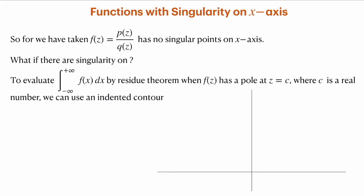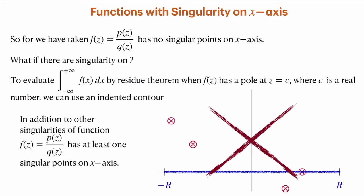Let me briefly explain what an indented contour is using this diagram. We have several singularities of function f(z) in the complex plane. In the earlier case, we avoided functions with a singular point on the x-axis, but now we consider that there is at least one simple pole on the x-axis. In such a case, we cannot use our earlier method of integrating along the real axis from minus R to plus R, because we have a singular point at z = c.